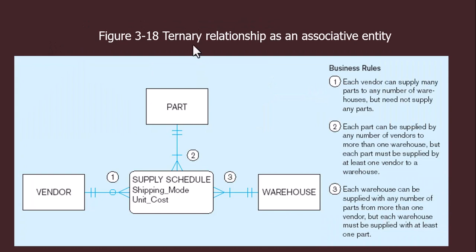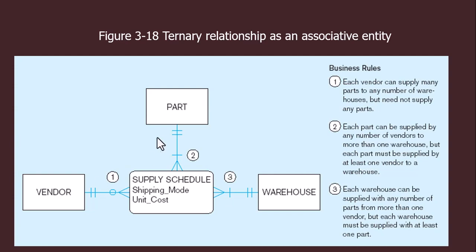Now it is converted to an associative entity — we put the mandatory cardinality constraint here and bring the associative entity in. The property of the associative entity is that it must have many-to-many cardinality, with the possibility of optional or mandatory many, but there should be a many coordinate here. This shows one vendor can supply many parts to many warehouses, one part can be supplied to many vendors and many warehouses, and in one warehouse many parts can be supplied by many vendors — but there should be at least one part, one warehouse, and one vendor.